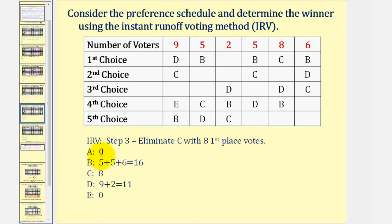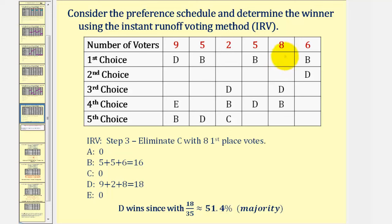For the next step, notice candidate C has the least votes, so we eliminate candidate C. By doing this, these 8 votes now go to candidate D. So A still has 0, B still has 16, C now has 0, but D now has 18, which gives D a majority of the votes. That's 18 divided by 35, approximately 51.4 percent, and therefore D wins using the instant runoff method.